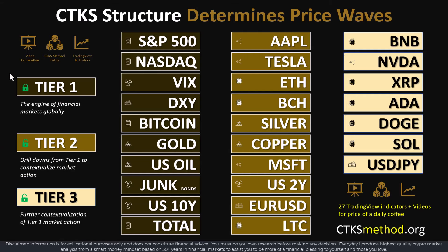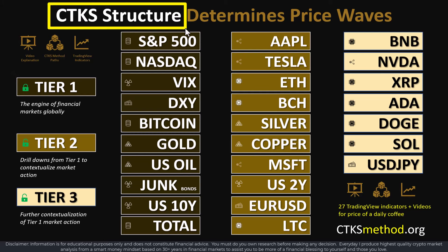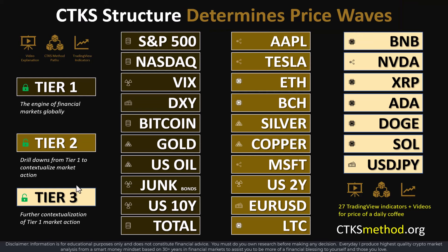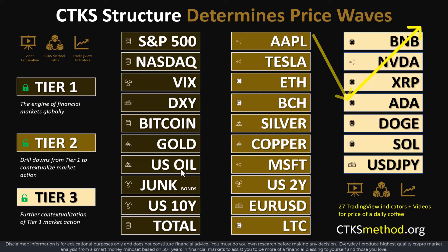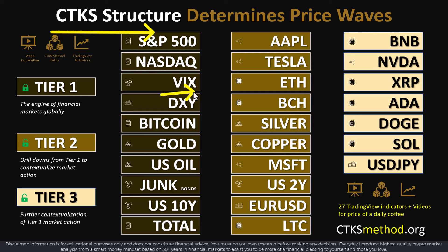Financial markets are like everything in life — you must have a degree of knowledge if you wish to be successful. Those horizontal dotted lines are called CTKS structure, and they determine price waves. Price is always going up and down — it goes up and then it comes down — this is price just moving in a wave, this is normal. When it gets to a resistance level, it's going down. When it gets to a support level, it's going up. The CTKS structure is the support and resistance levels inside markets, and they're very important to understand.